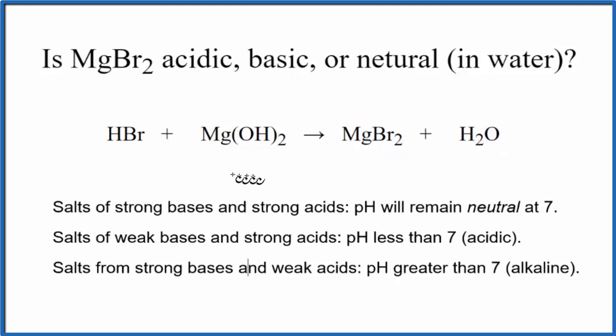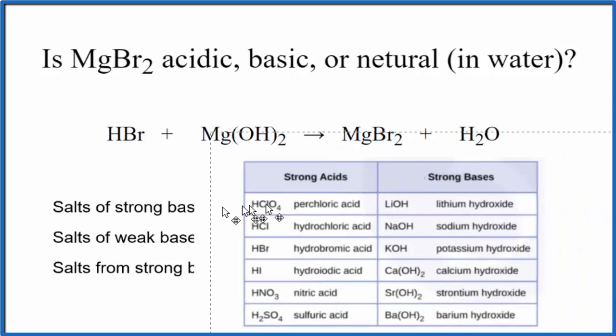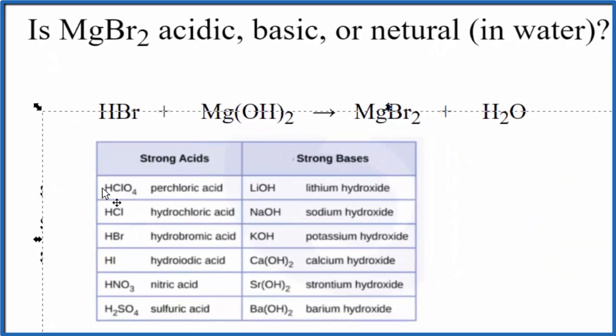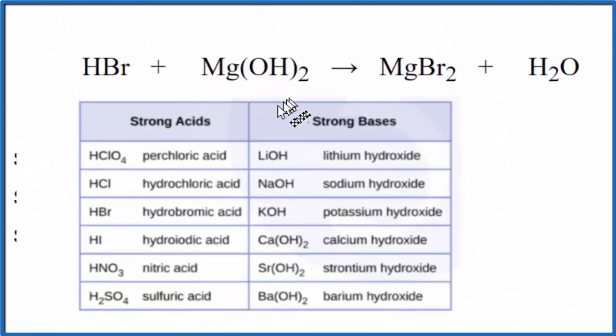Once we know the reaction, we need to know the strength of the acid and the base that make the magnesium bromide. This table is really useful. It's a good one to memorize. It lists the common strong acids and bases.